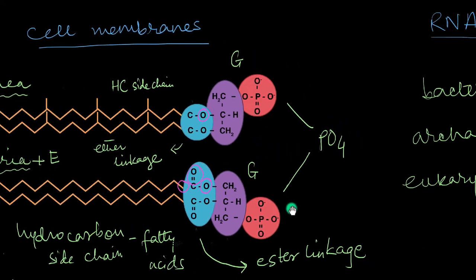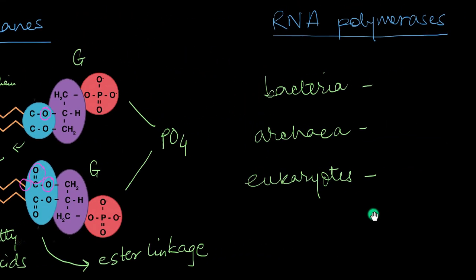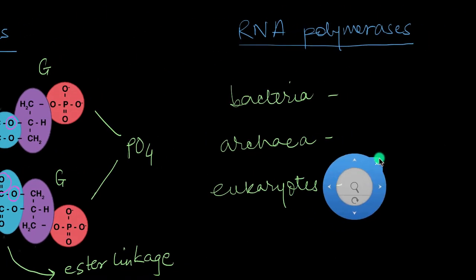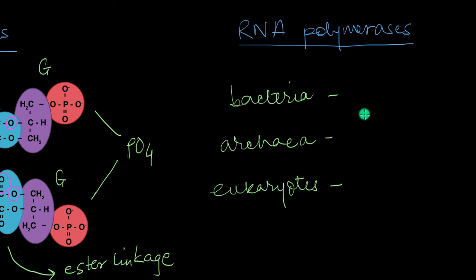Archaea also have quite complex RNA polymerases, the prime enzymes of transcription, aka the making of an RNA copy from a DNA segment. Bacteria have a very simple RNA polymerase, which is made up of like four polypeptides only.